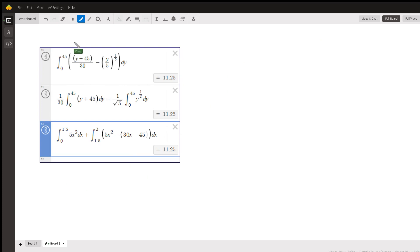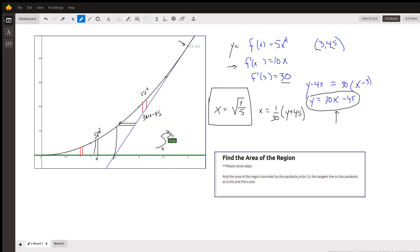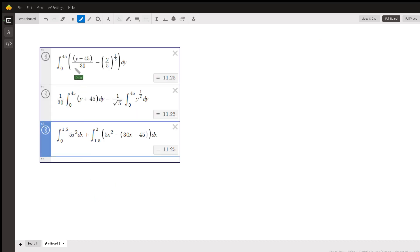Here is using horizontal rectangles going from—I think I said 0 to 3. It should have been 0 to 45 back here. Okay, 0 to 45 of x-coordinate at the right minus x-coordinate at the left. And if you want to, you can separate that into two separate integrals.